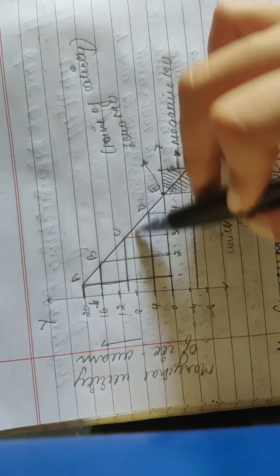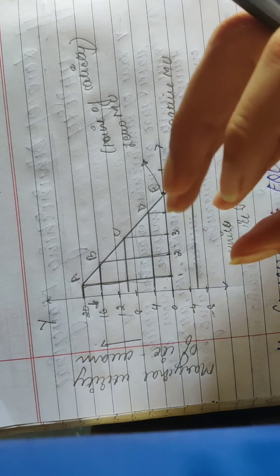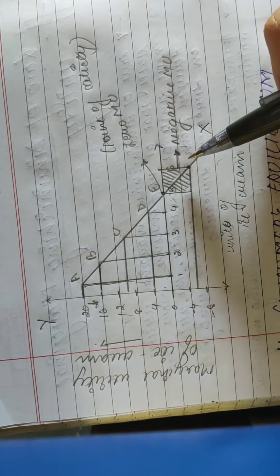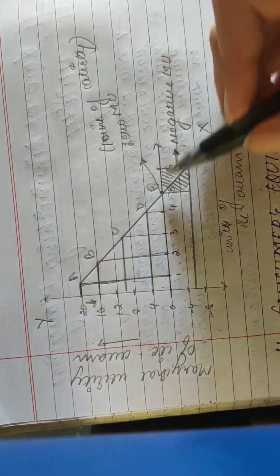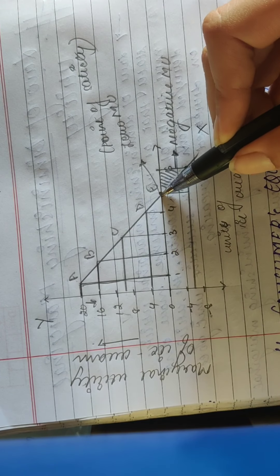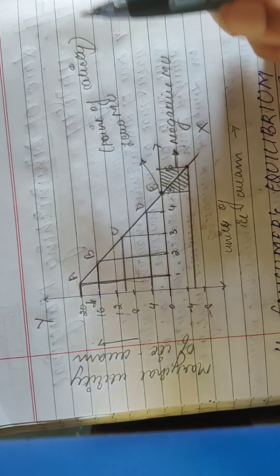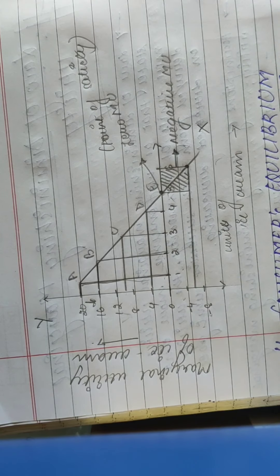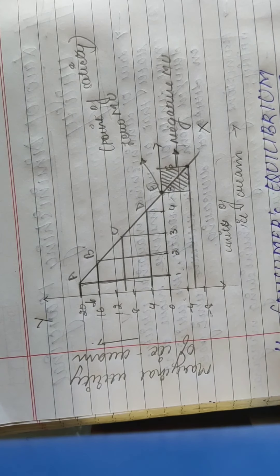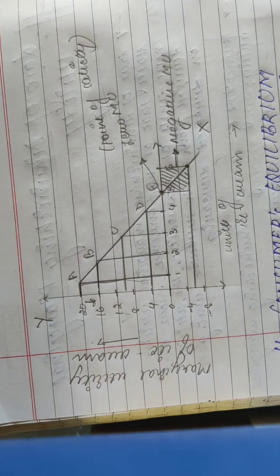When MU reaches zero, that point is known as the point of satiety — just a thing to remember if someone asks. That's all for today in this chapter. We will start from consumer equilibrium under the cardinal approach in the next video. Thank you for watching. Take care. Bye-bye.